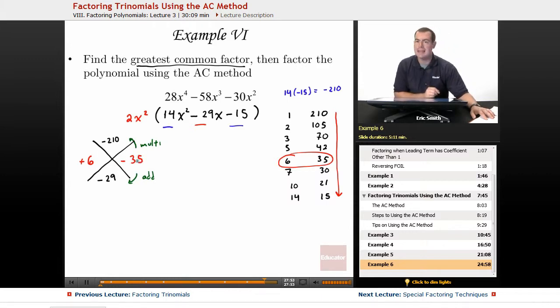Sure enough, those multiply to give us the negative 210, and they add to give us the negative 29. Sometimes you might have to go through really checking these one by one, but you know, it's definitely a worthy process. All right, so we have that. I'm going to write down the 14x squared, the minus 15, and let's take our middle term and split it out. So plus 6x, minus 35x. All right, now we can continue with our factor by grouping.